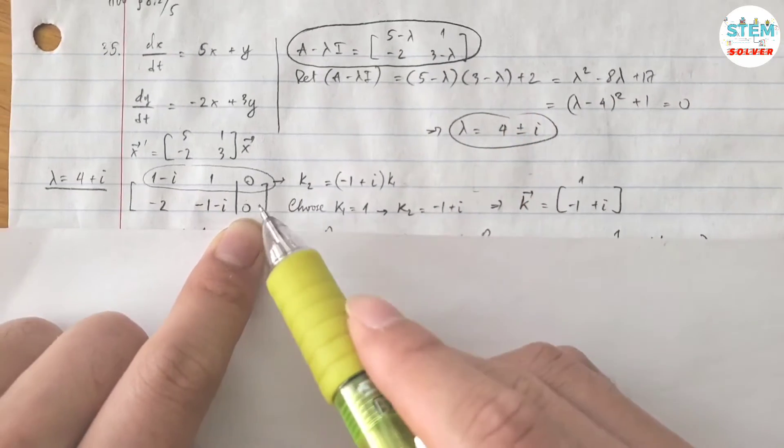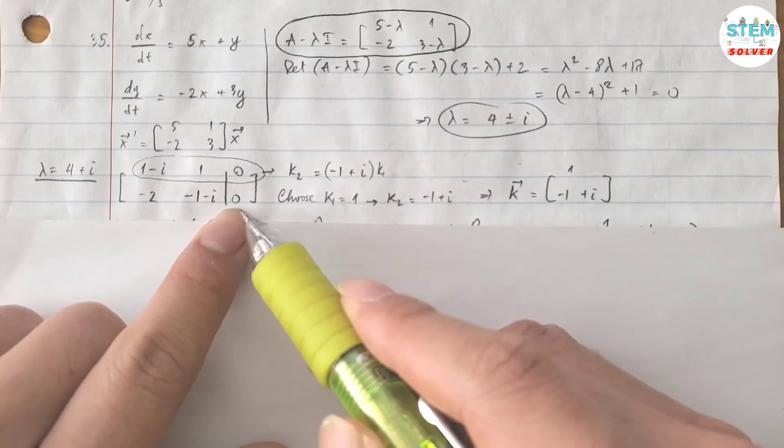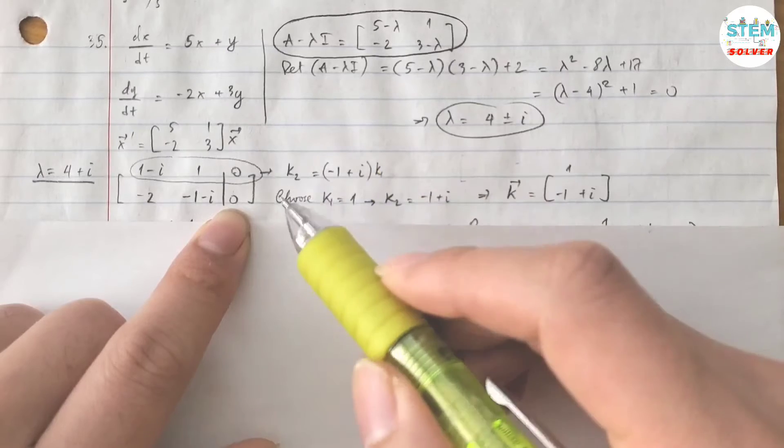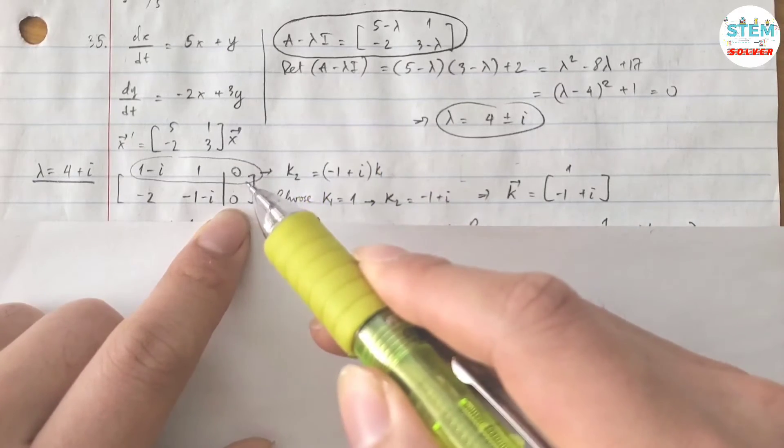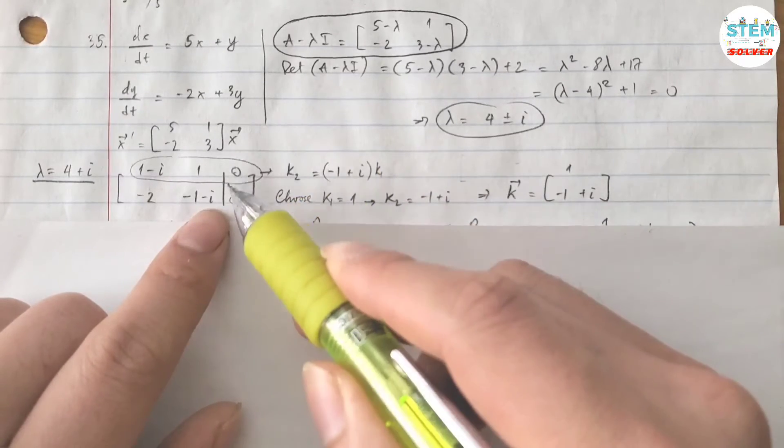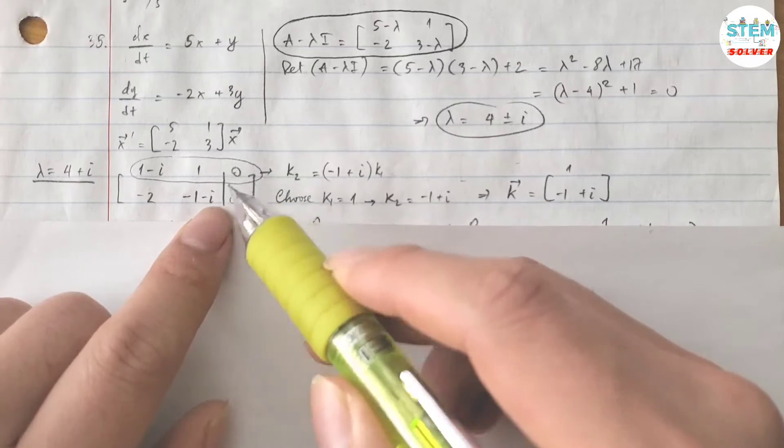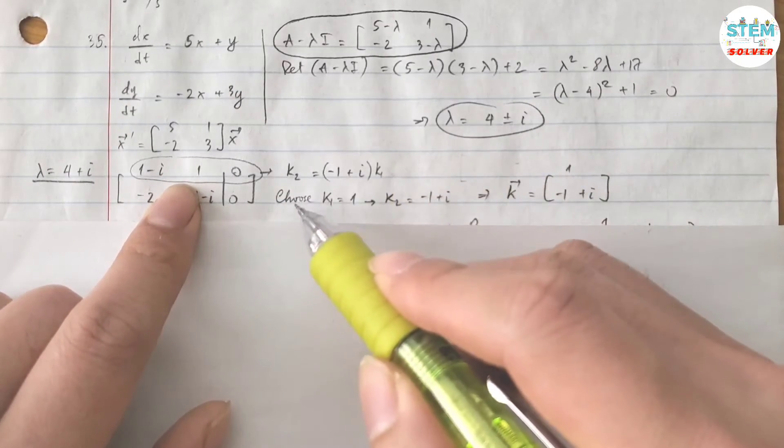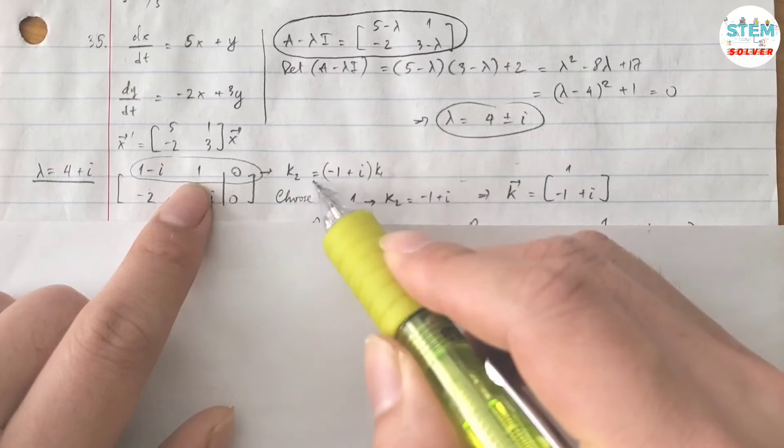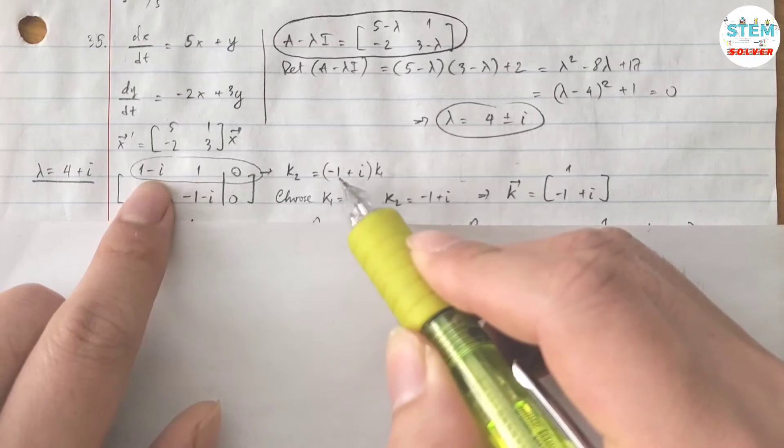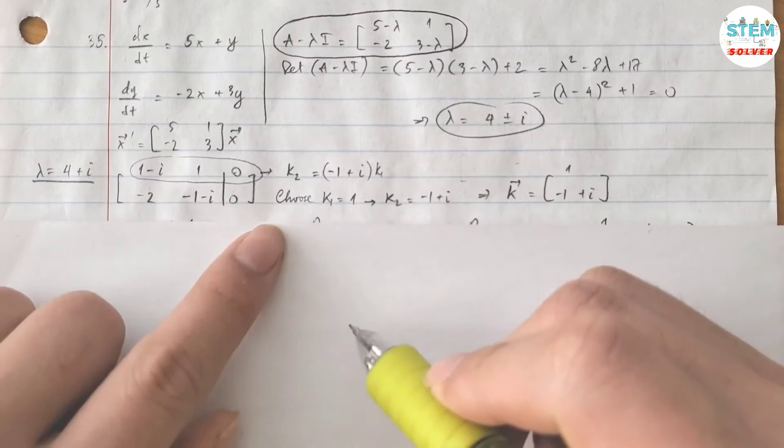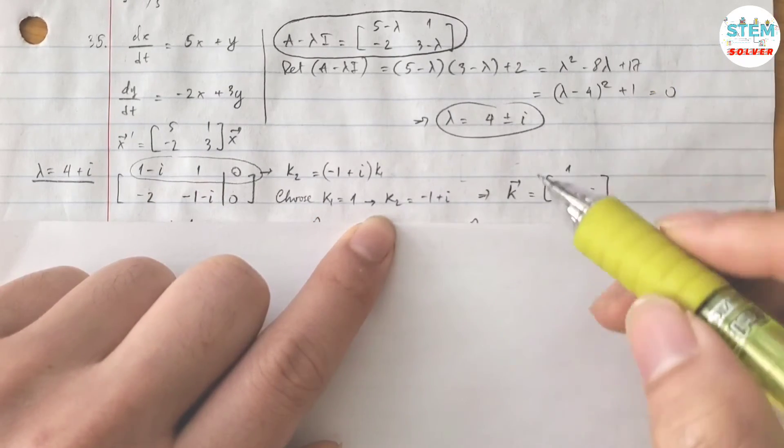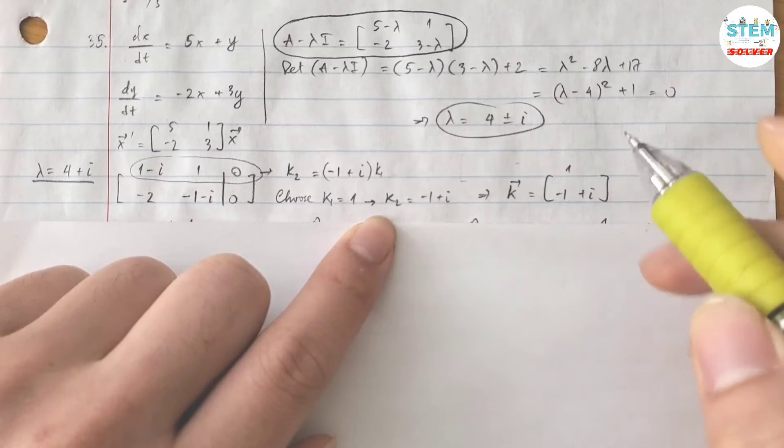So I know this will give me infinite solutions. So instead of going through all those matrices to reduce down to basis matrix, I can use either one of these equations to solve for the unknown directly. Let's use the first equation. I have k2 equals negative 1 plus i times k1. If I choose k1 equals 1, then k2 is negative 1 plus i. Then my vector k is [1, negative 1 plus i].